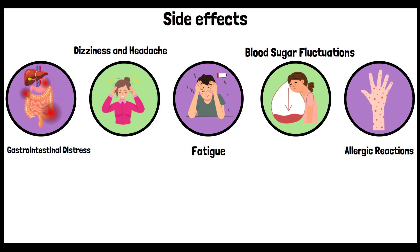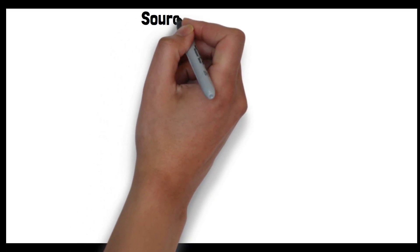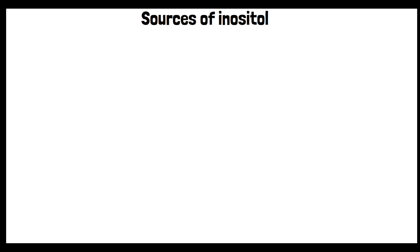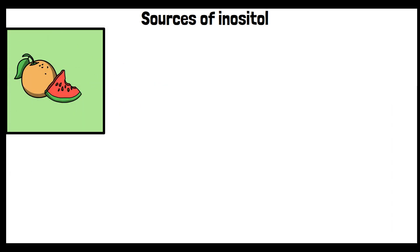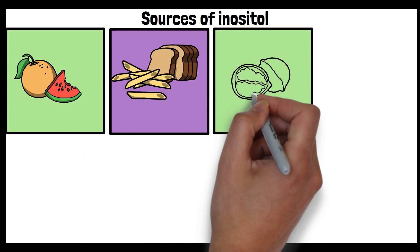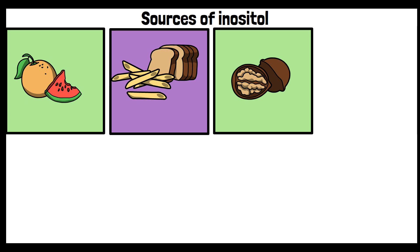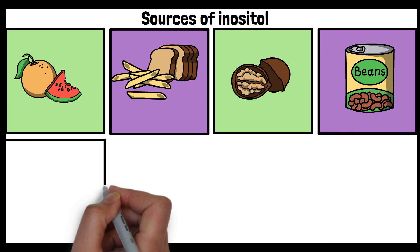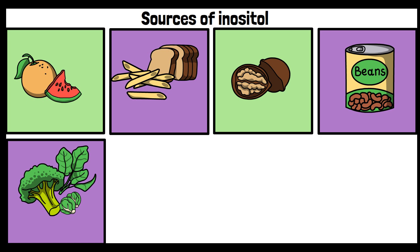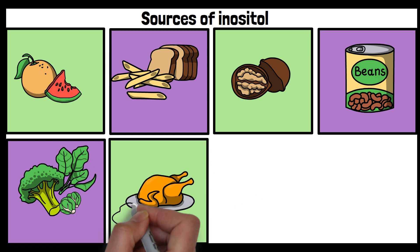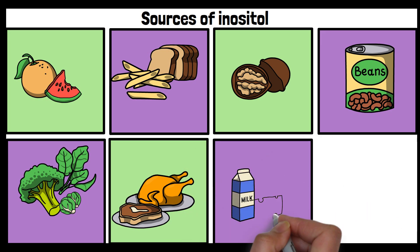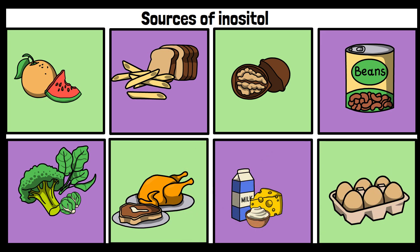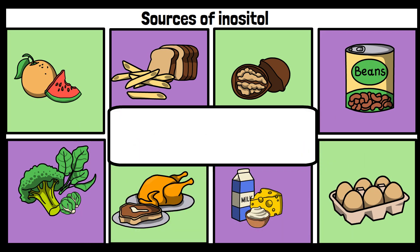Inositol isn't just found in supplements — there is an abundance in many different types of food. Great sources include fruits, especially oranges, grapefruits, and cantaloupe; whole grains like bread and pasta; nuts and seeds such as almonds, walnuts, peanuts, flax seeds, and sunflower seeds; legumes like kidney beans, navy beans, black beans, lentils, and chickpeas; vegetables such as green leafy vegetables like spinach and kale, Brussels sprouts, broccoli, and asparagus; meat and poultry, especially liver; and dairy products and eggs. Incorporating a variety of these foods into a balanced diet can help naturally increase inositol intake.